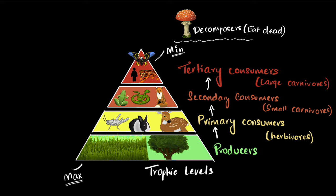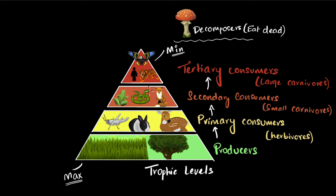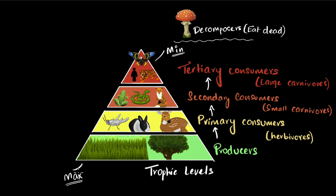Finally, some animals are both herbivores and carnivores — we call them omnivores. For example, human beings eat both vegetables and meat. Technically that means we should also be primary consumers, but of course nobody eats us, so it doesn't make sense to place us there. This is all to say that this classification is not so straightforward — there will always be exceptions. We classify to make sense of everything, but many things won't fit neatly.